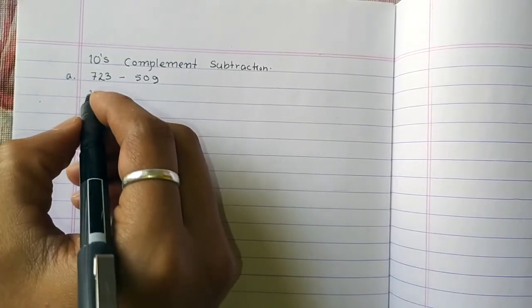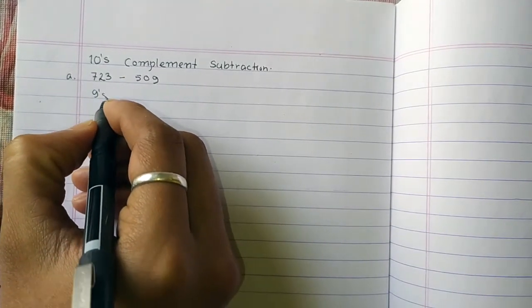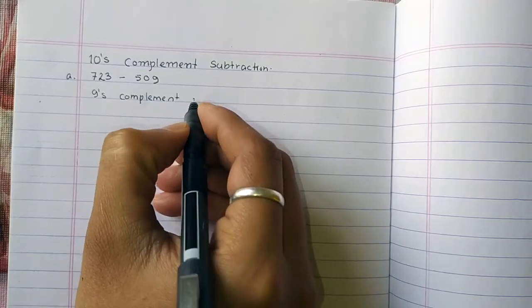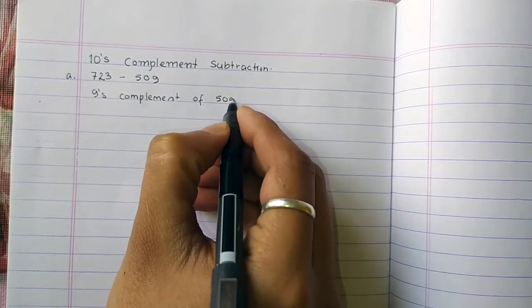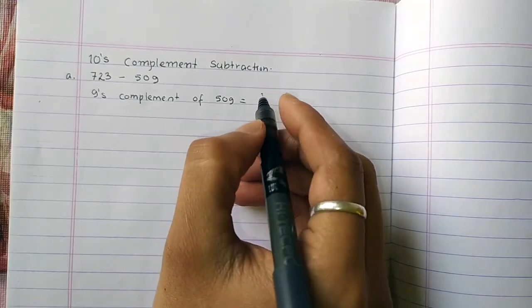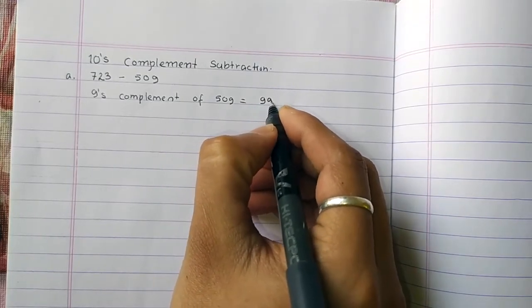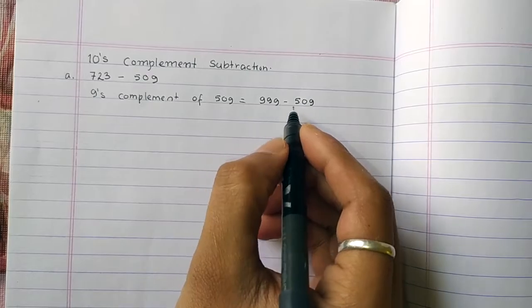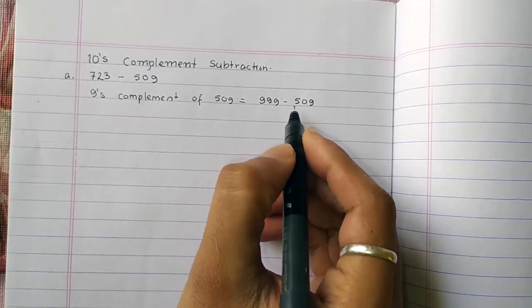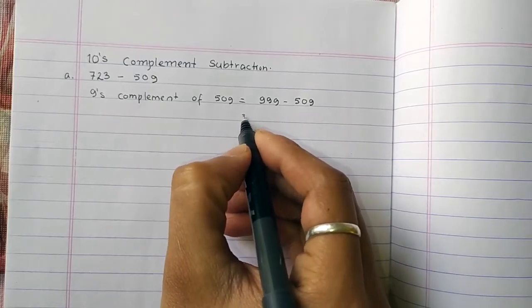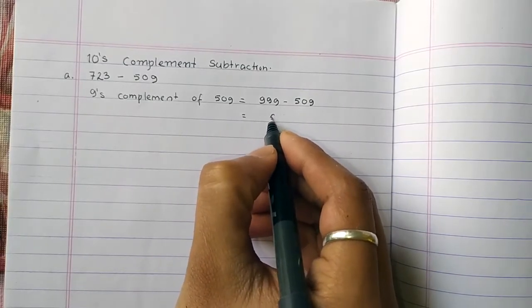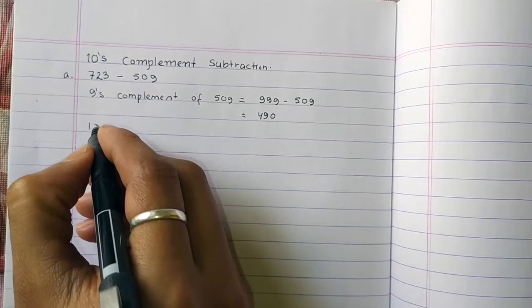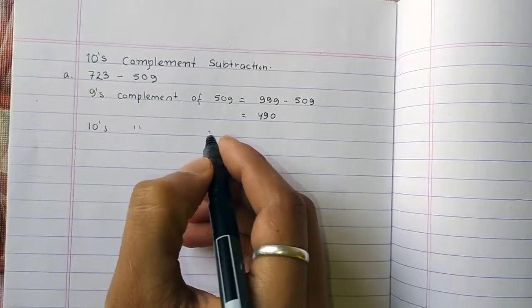Let's take the 9's complement of 509. The 9's complement is 999 minus 509. So 9 minus 5 is 4, 9 minus 0 is 9, 9 minus 9 is 0, which equals 490.